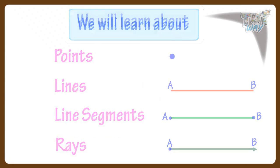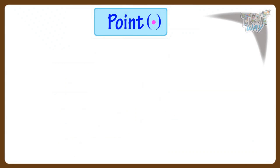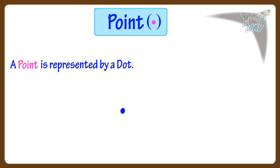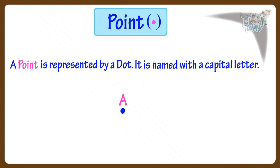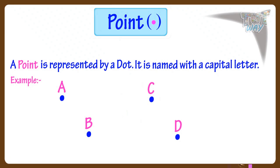Let's start with a point. A point is represented by a dot. It is named with a capital letter. For example, this is point A. Here are more examples of points. Here, A, B, C, D are points.